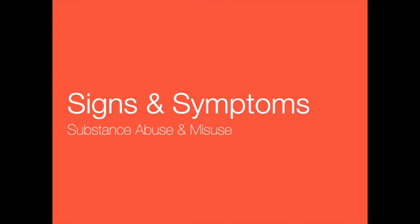If the patient is incoherent or unconscious, try to get information from bystanders or family members. Since many physical signs of abuse mimic other conditions, you may not be able to determine that a patient has overdosed. To provide care, you only need to recognize abnormalities in breathing, skin color and moisture, body temperature, and behavior — any of which indicate a condition requiring professional help.